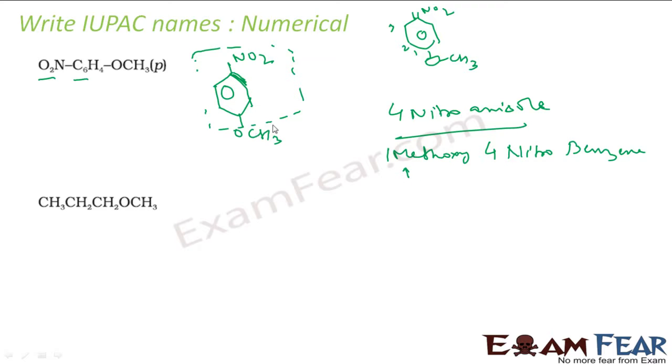Alphabetically, methoxy comes before nitro, so it's 1-methoxy-4-nitrobenzene. You can give any of these names—they're all the same.